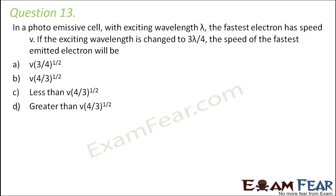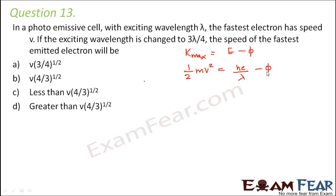Let's move to question number 13. In a photoemissive cell with exciting wavelength lambda, the fastest electron has speed V. If the exciting wavelength is changed to 3λ/4, the speed of the fastest emitted electron will be? We need to find the relationship between wavelength and the velocity of the emitted electron. From the photoelectric equation, maximum kinetic energy is E minus φ, so ½mv² = hc/λ − φ.